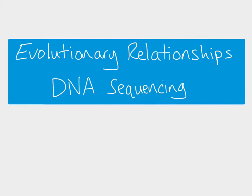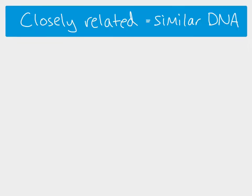This video is looking at evolutionary relationships and how we use DNA sequencing to work out the relationships between species. If you have species that are closely related, they will have more similar DNA.